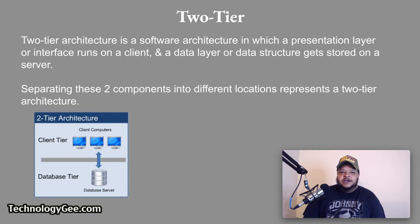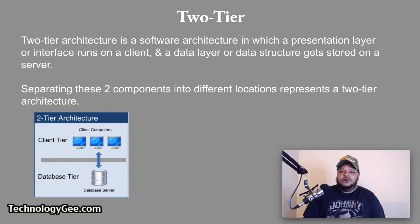Two-tier: a two-tier architecture is a software architecture in which a presentation layer or interface runs on a client and a data layer or data structure gets stored on a server. Separating these two components into different locations represents a two-tier architecture.